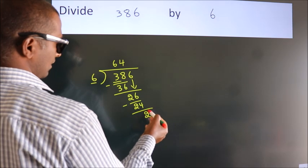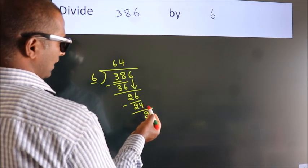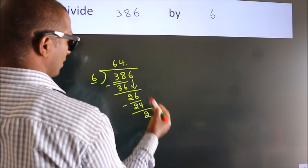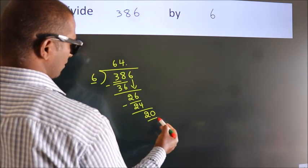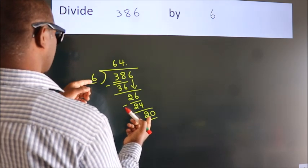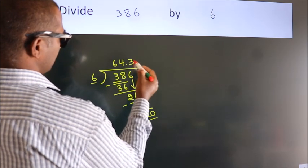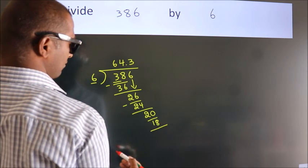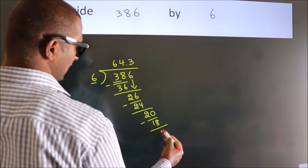After this, no more numbers to bring down. So what we do is we put a dot and take 0, making 20. A number close to 20 in the 6 table is 6 threes, 18. Now we subtract. We get 2.